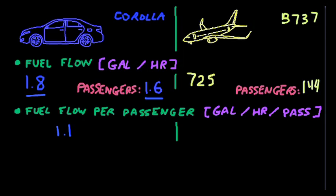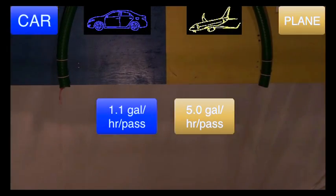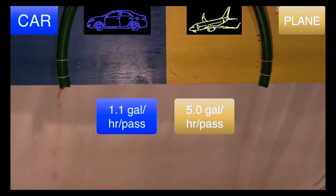Now for the plane, 725 gallons per hour divided by 144 passengers yields 5.0 gallons per hour per passenger. Have you noticed how much closer the numbers are? Now, this is what it looks like in the experiment. These are the fuel flows divided by the average number of passengers for the car on the left and for the plane on the right. The fuel flows are now much closer, but the plane still appears to be thirstier than the car.